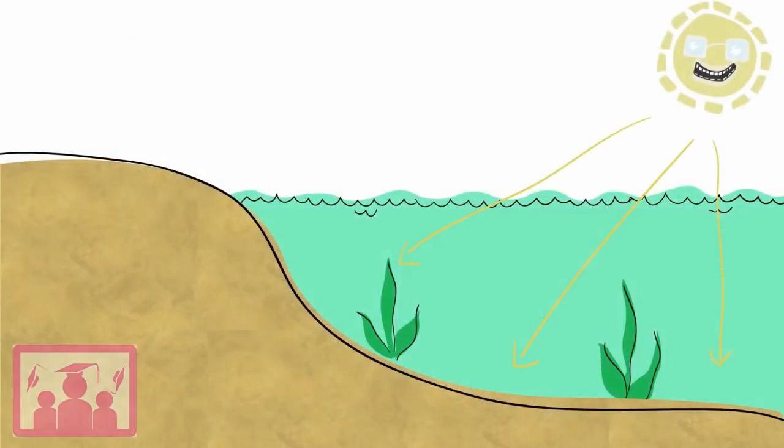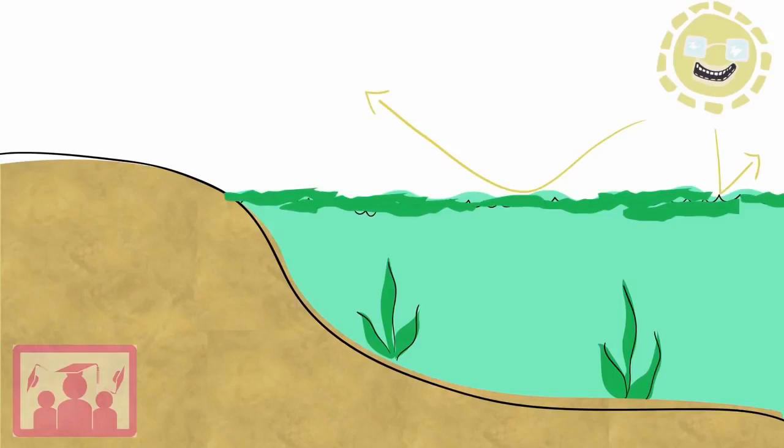This algal bloom will absorb sunlight shining on the water, so the sunlight can't reach the bottom. Plants who need this light to photosynthesise will die.